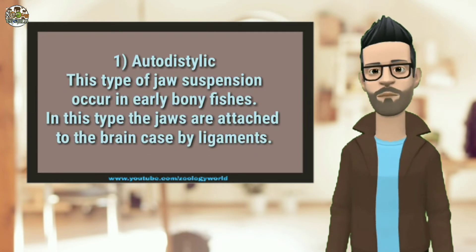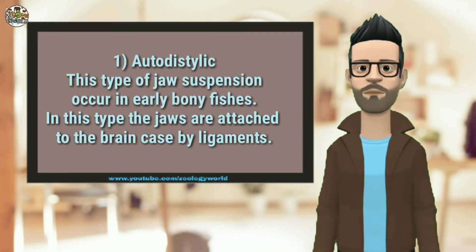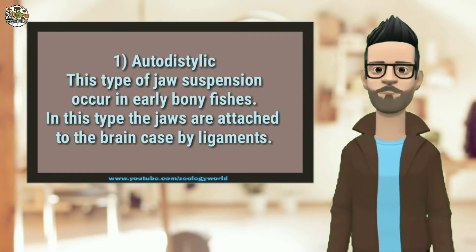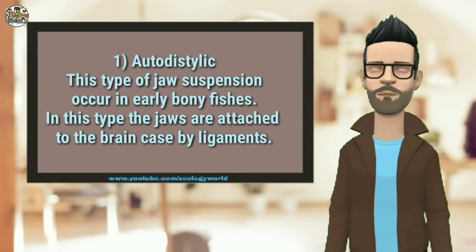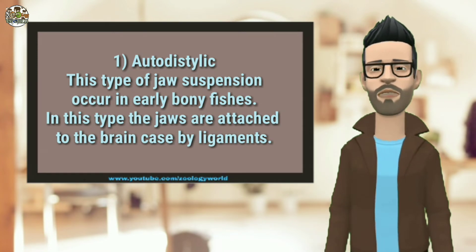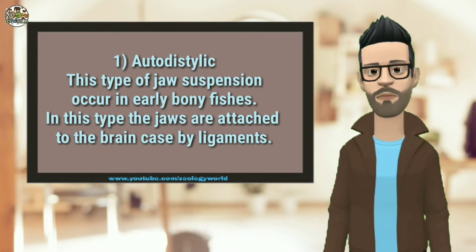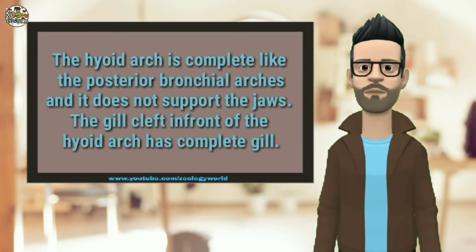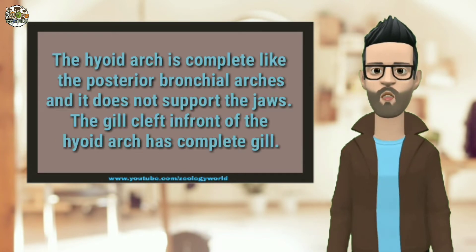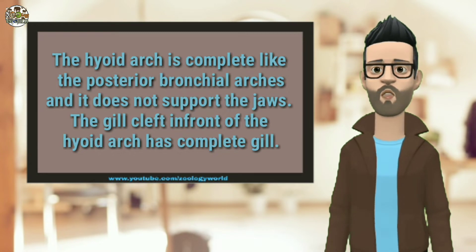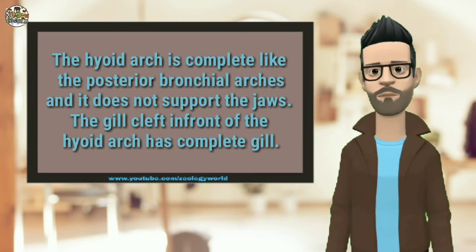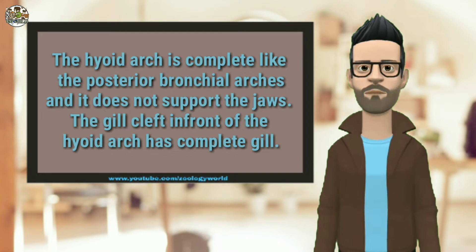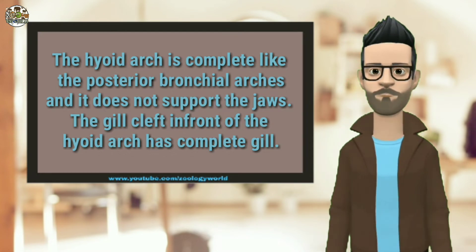This type of jaw suspension occurs in early bony fishes. In this type, the jaws are attached to the brain case by ligaments. The hyoid arc is complete like the posterior branchial arcs and does not support the jaws. The gill cleft in front of the hyoid arc has a complete gill.